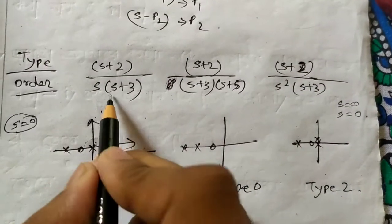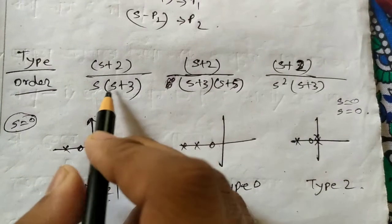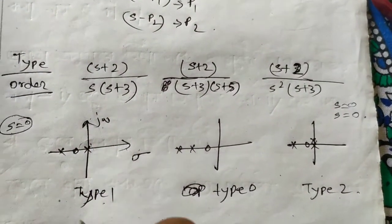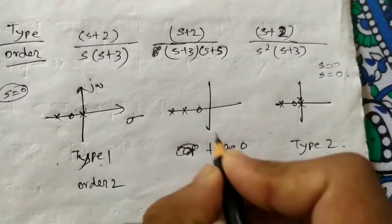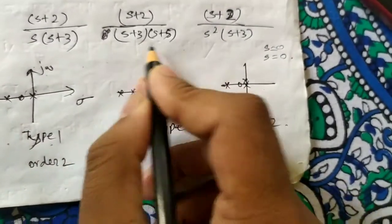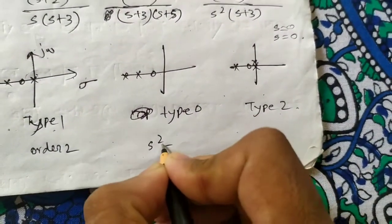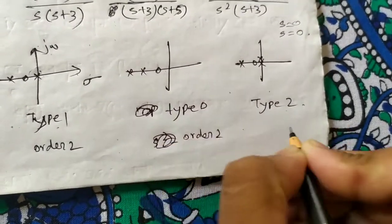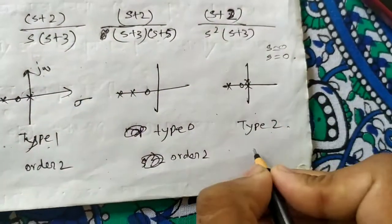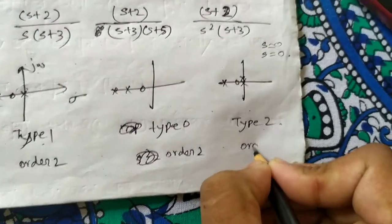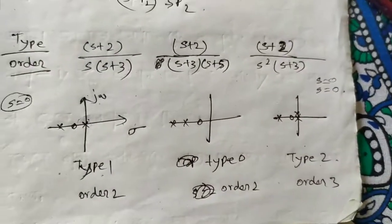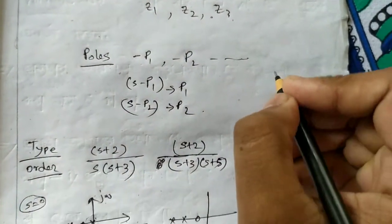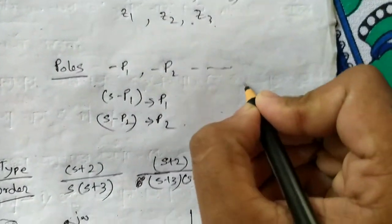Order is simply the order of the denominator polynomial. If the denominator is S squared, the order is 2. If the denominator has S squared times another term giving S cubed overall, the order is 3.